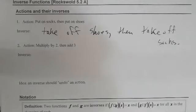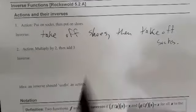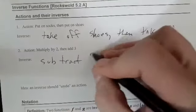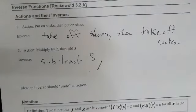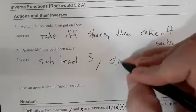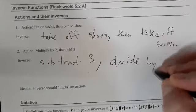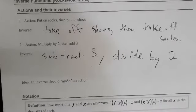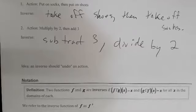For example: multiply by two, then add three. If we want to undo this, we have to start from the end. We undo the add three first — the inverse of addition is subtraction, so we subtract three. Then the inverse of multiplication is division, so we divide by the same number we multiplied by. The idea is an inverse should undo an action.